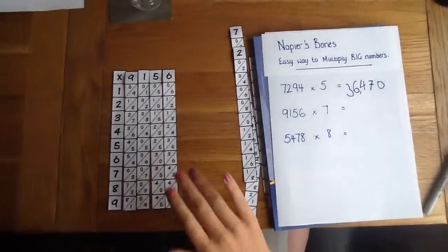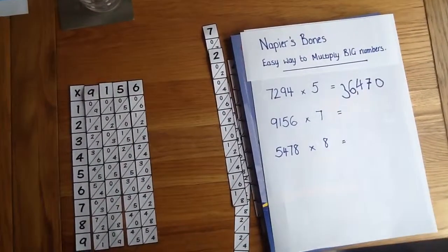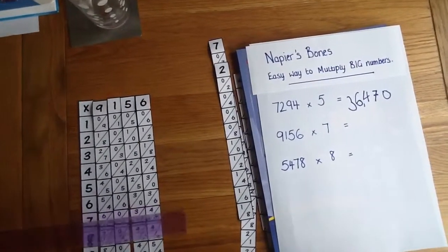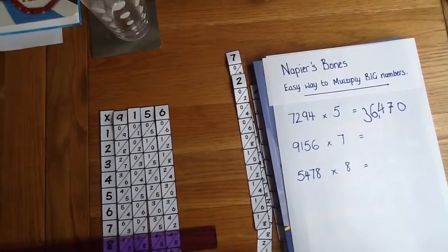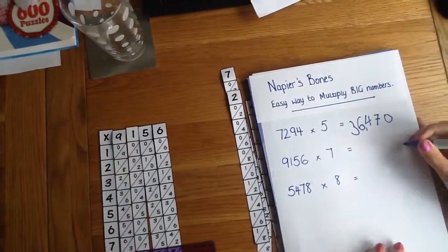Move all the other ones out of the way and make sure we've got them lined up properly. Okay so with this one we're timesing by 7. So if I pop the ruler underneath the 7 then we can see where we're working from. So working from the end.